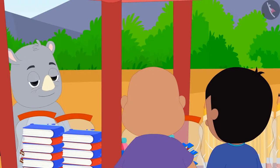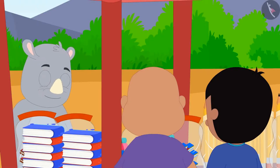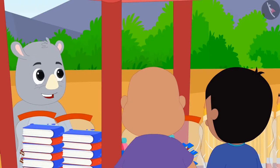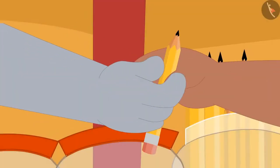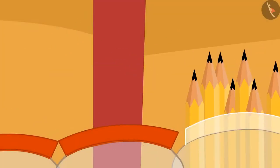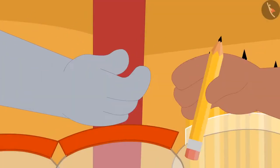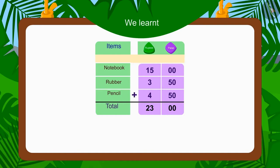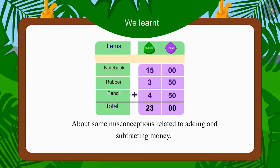Gaggu was happy to see the honesty of those children and gave them one pencil each for free. In this video, we saw some common mistakes related to adding and subtracting money.